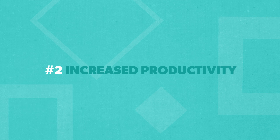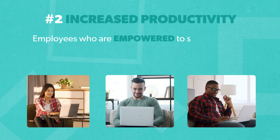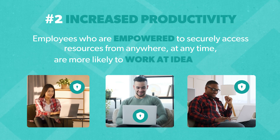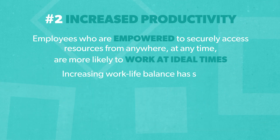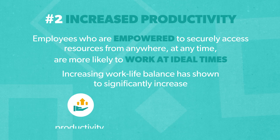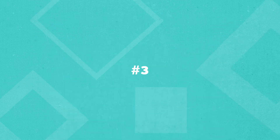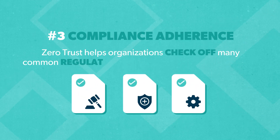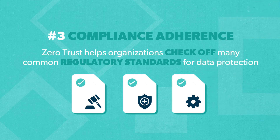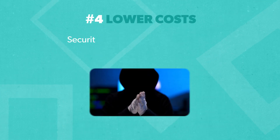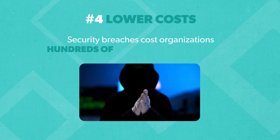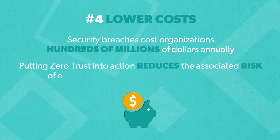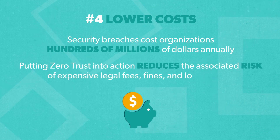Two: increased productivity. Employees who are empowered to securely access resources from anywhere at any time are more likely to work at ideal times. Increasing work-life balance has shown to significantly increase productivity and worker satisfaction. Three: compliance adherence. Zero Trust helps organizations check off many common regulatory standards for data protection. Four: lowered costs. Security breaches cost organizations hundreds of millions of dollars annually. Putting Zero Trust into action reduces the associated risk of expensive legal fees, fines, and lost revenue.